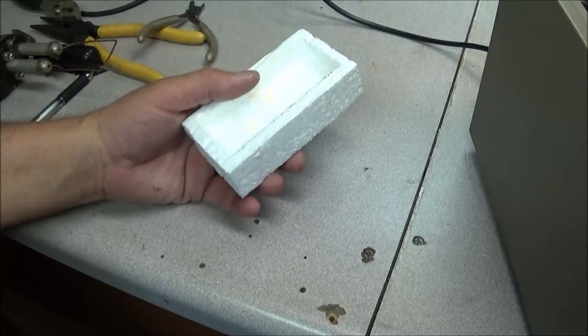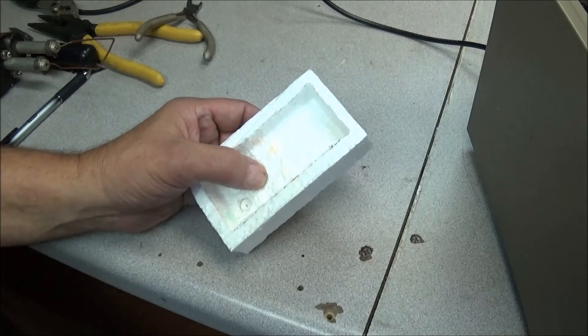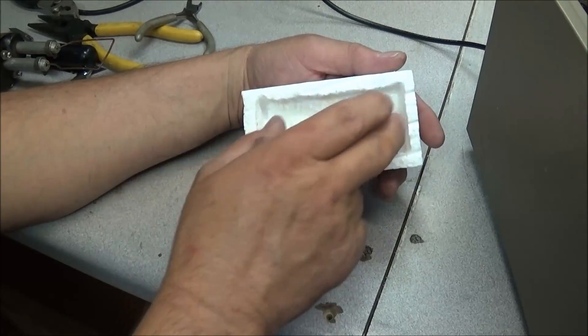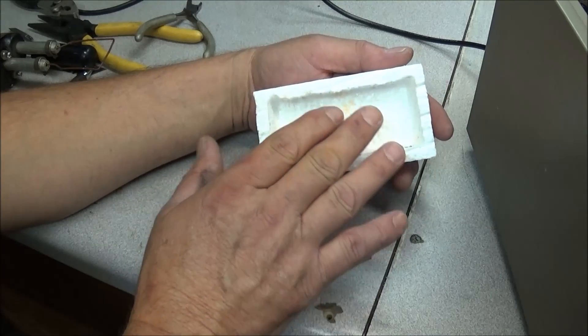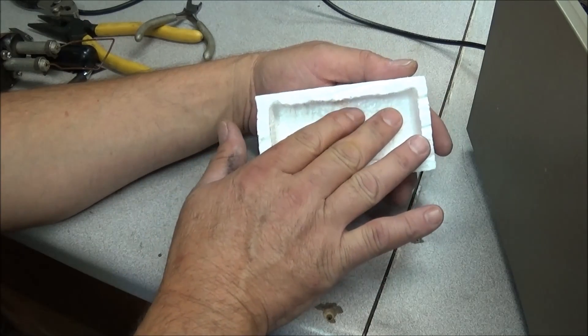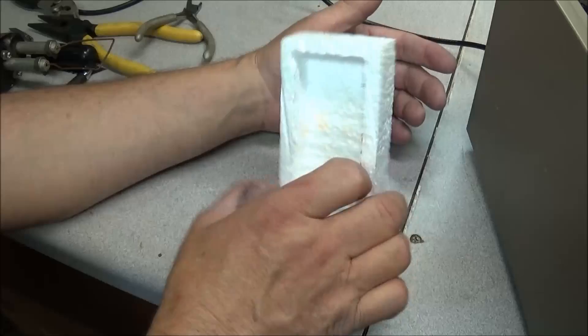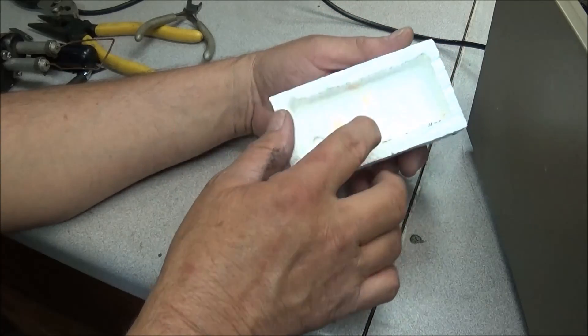So after your styrofoam cover is made, it wouldn't hurt to coat it with a bit of epoxy on the inside. And this will help to resist some of that heat. The good thing about the styrofoam, it'll help keep the moisture out of the box also.